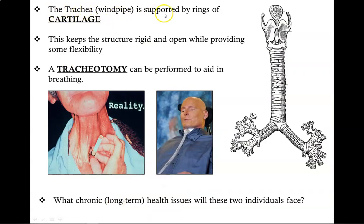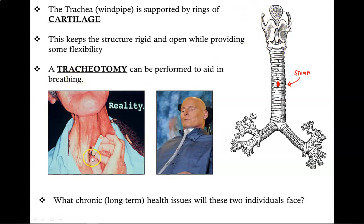The trachea, also known as the windpipe, is supported by rings of cartilage. Cartilage is the material found in your nose — it's rigid enough to give the structure some shape, but at the same time provides some flexibility. In situations where the airway may be blocked, a tracheotomy can be performed to aid in breathing. That's where you cut in between the cartilage, creating a hole called a stoma, and that will allow you to bypass any obstructions or issues with the upper part of the respiratory tract, so air can go directly into the trachea and straight to the lungs. For example, one person shown here lost a part of their throat to cancer. Because they no longer have the ability to bring air in from their mouth or nose, they need a stoma in order to allow air in. Unfortunately, due to the addictive nature of cigarettes — which probably caused the cancer — they still need to smoke through their stoma.